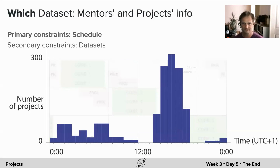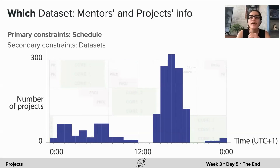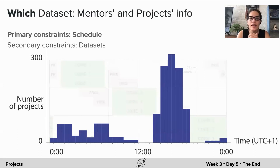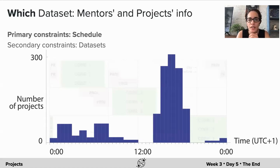Which was the dataset we worked with? We had more than 350 mentors who provided their availability — the time slots over different days of the week that they could spend mentoring. We had a distribution of mentor times across different time zones, and at the same time a distribution of projects submitted at the end of the first week. We needed to work with these two datasets.